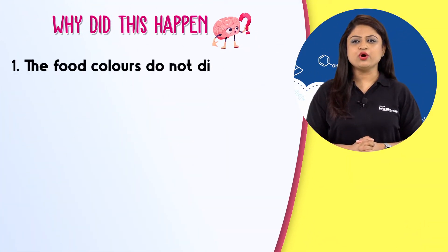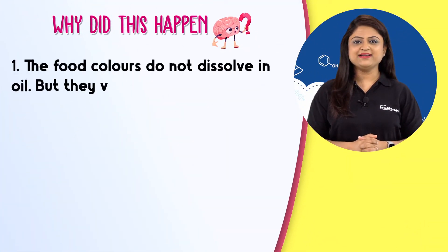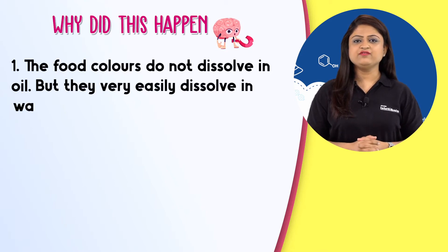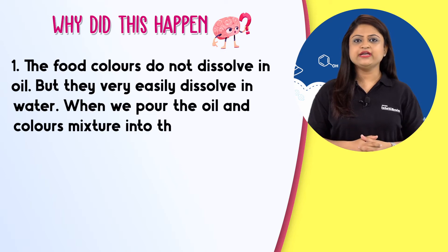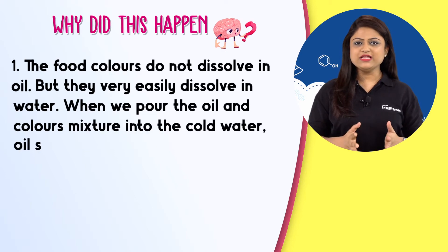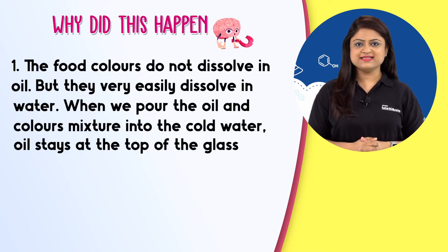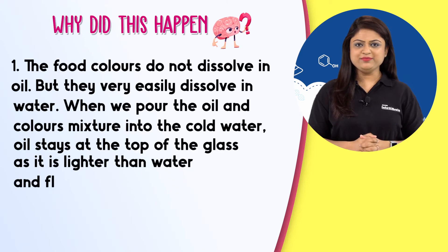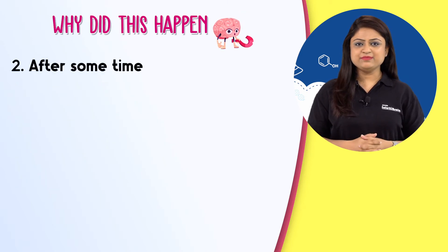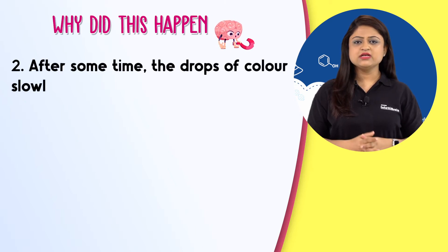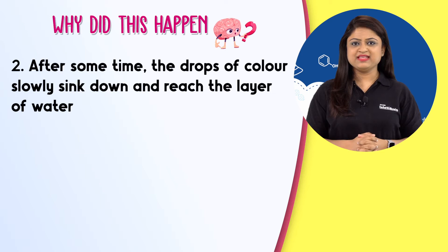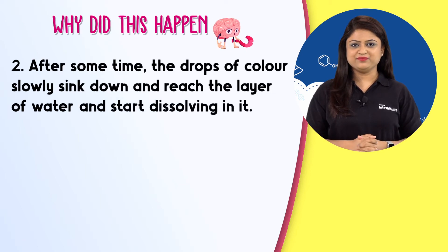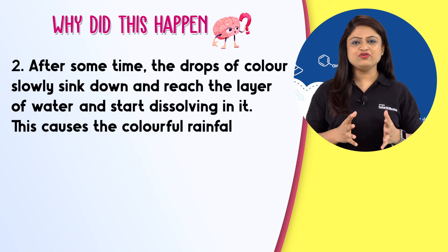The food colours do not dissolve in oil but they very easily dissolve in water. When we pour the oil and colours mixture into the cold water, oil stays at the top of the glass as it is lighter than water. After some time, the drops of colour slowly sink down and reach the layer of water and start dissolving in it. This causes the colourful rainfall effect.